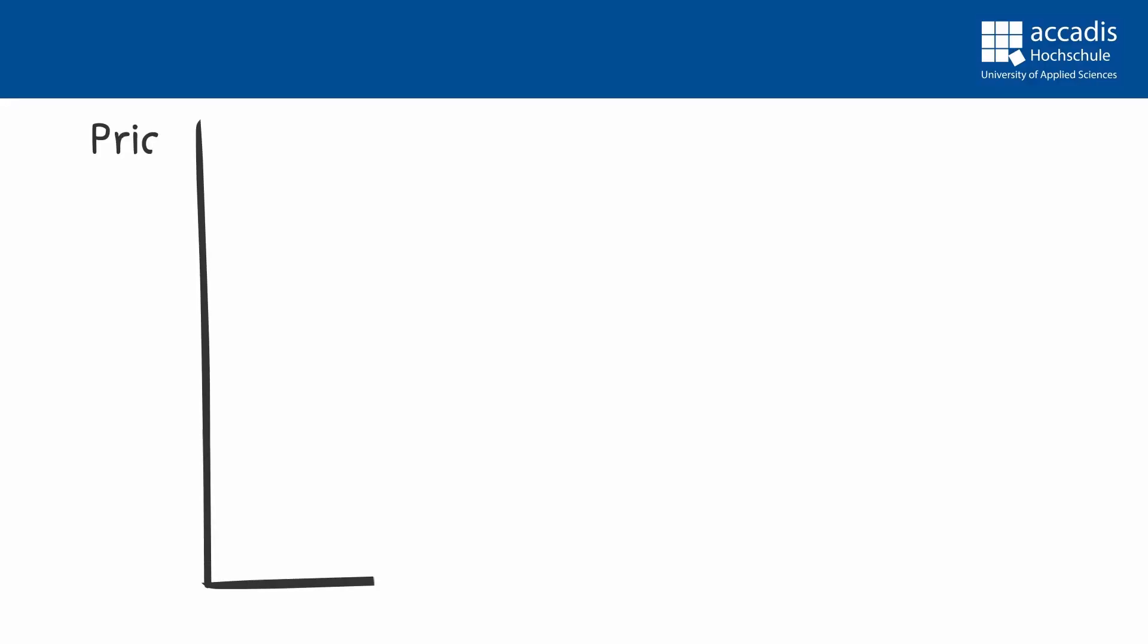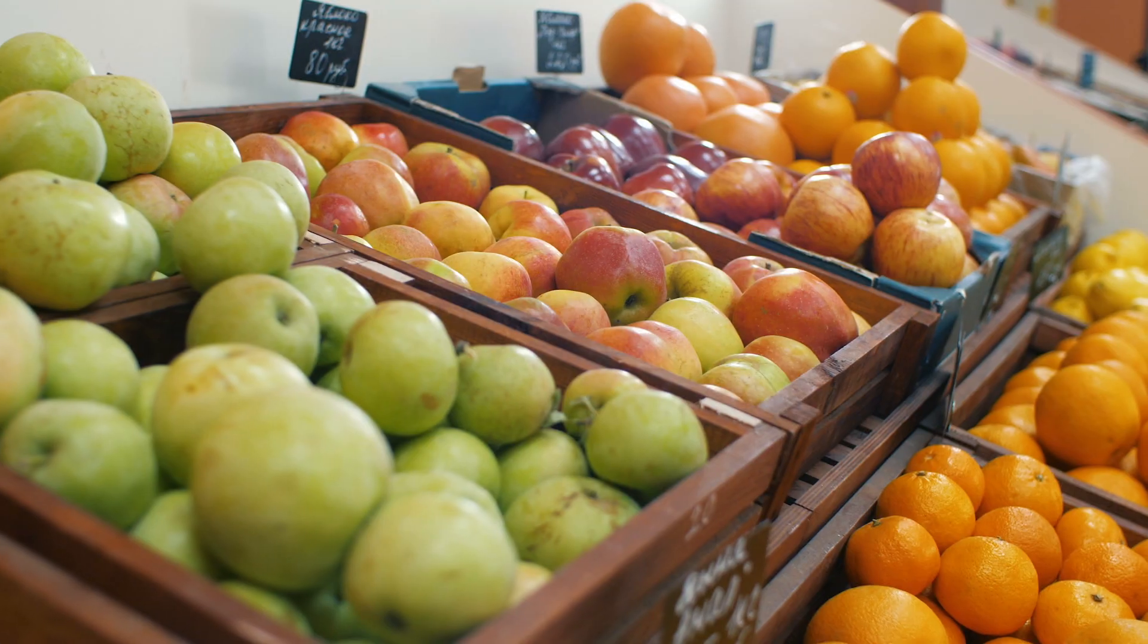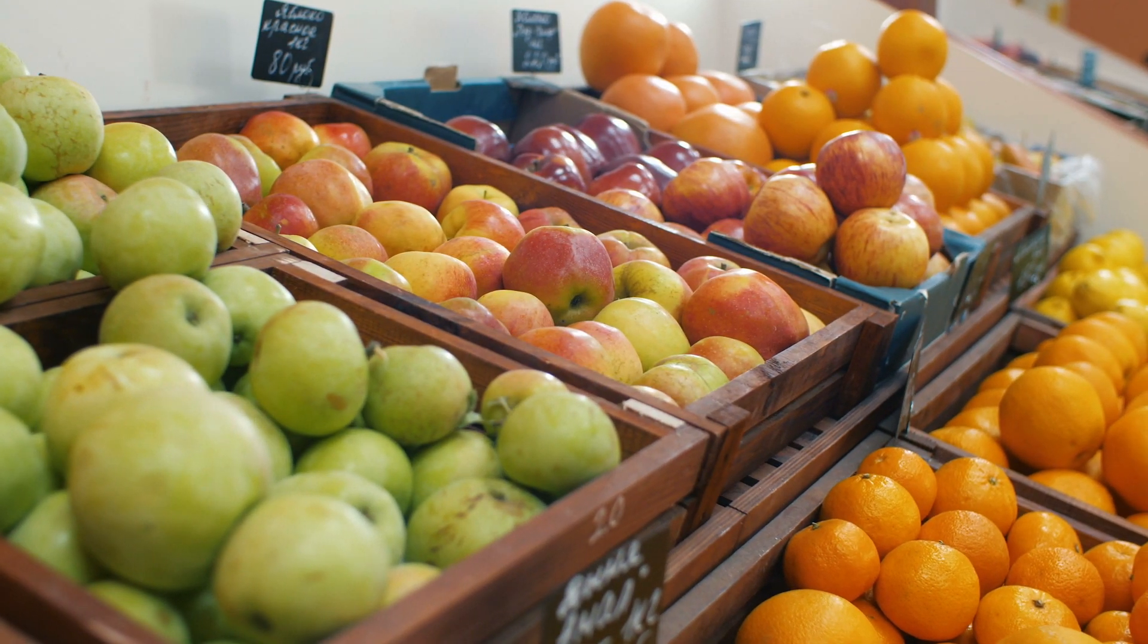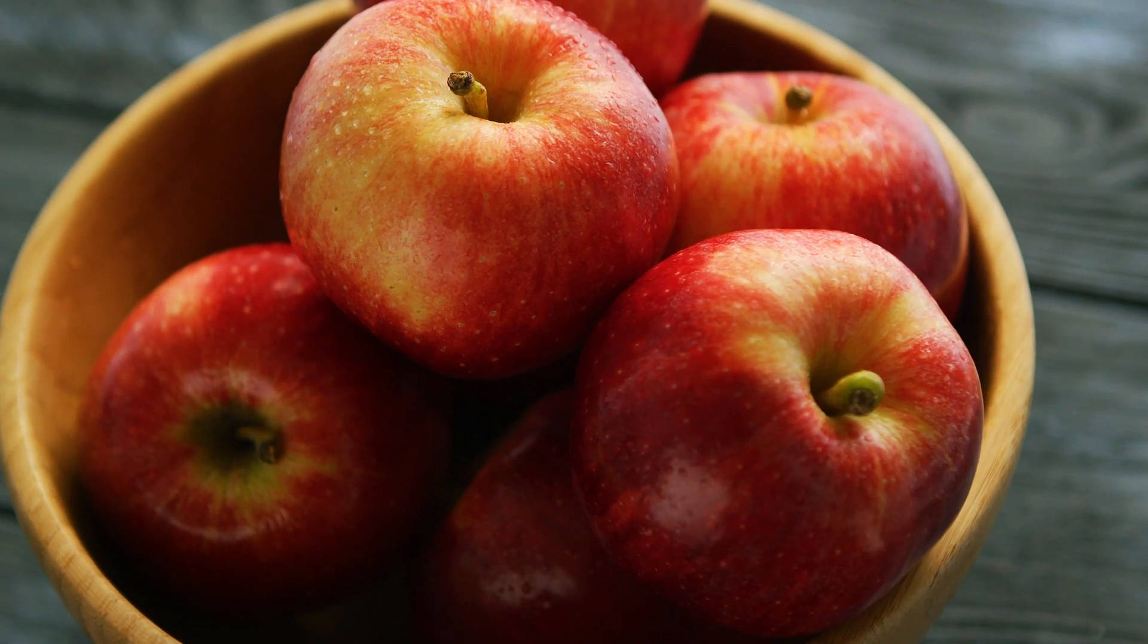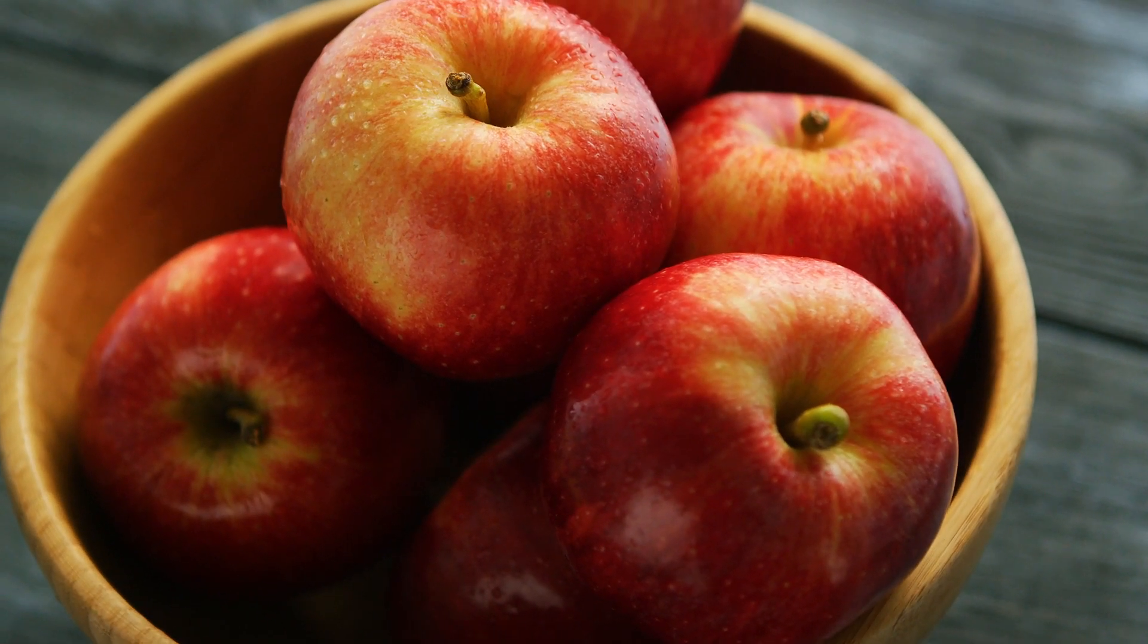But first we take a closer look at regular markets and look at what is defined as our market outcome. So we ask ourselves, what's the quantity? So how much will be bought and sold on our market? And what is the price? How much do we have to pay for our good? We can and will apply this model of the market mechanism to all kinds of goods and services, but we will start with a quite simple example of a good we are all familiar with. We will take a look at the market for apples.